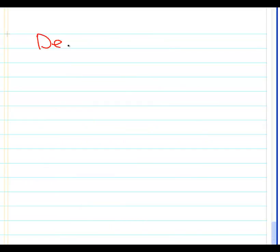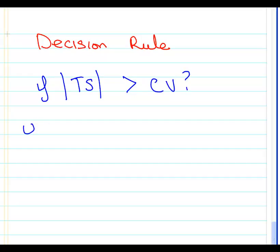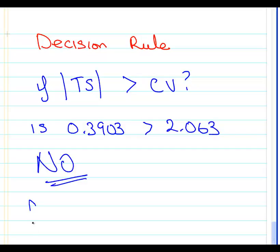So finally, is the decision rule. Is the absolute value of the test statistic greater than the critical value? Is 0.3903 greater than 2.063? No. Fail to reject null hypothesis. There's not enough evidence to say that one is different to the other. Echelon, DeltaTech, we can't discern if one is better than the other. So that's a two-sample, two small independent samples hypothesis test. Thank you.